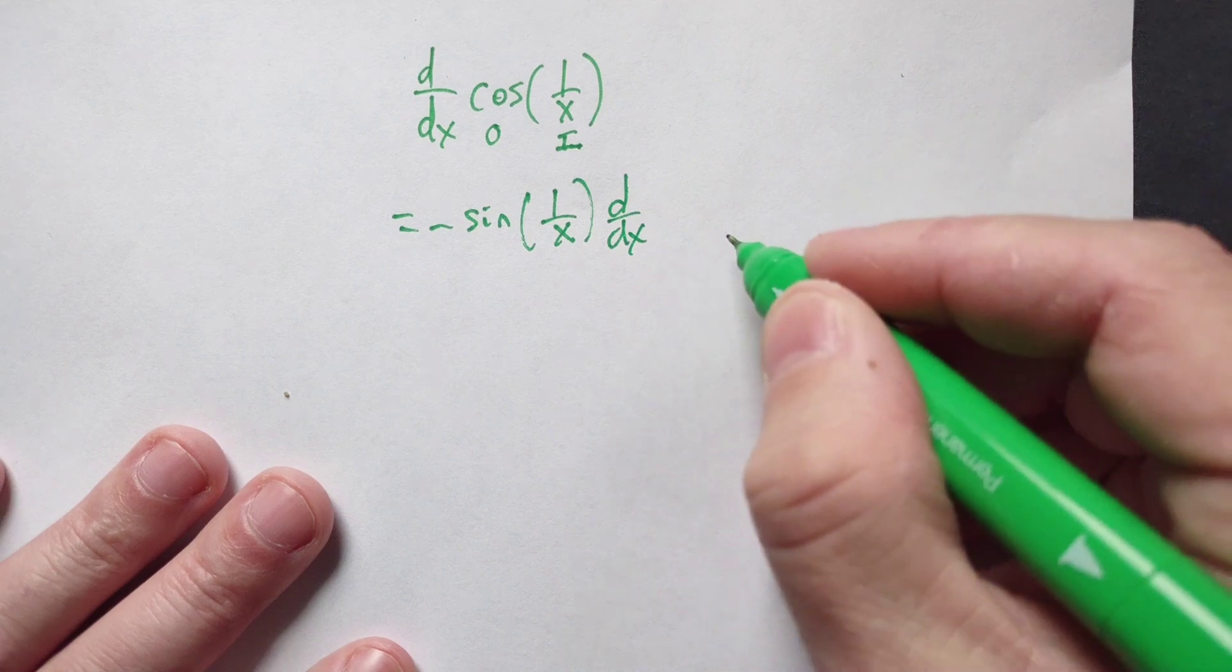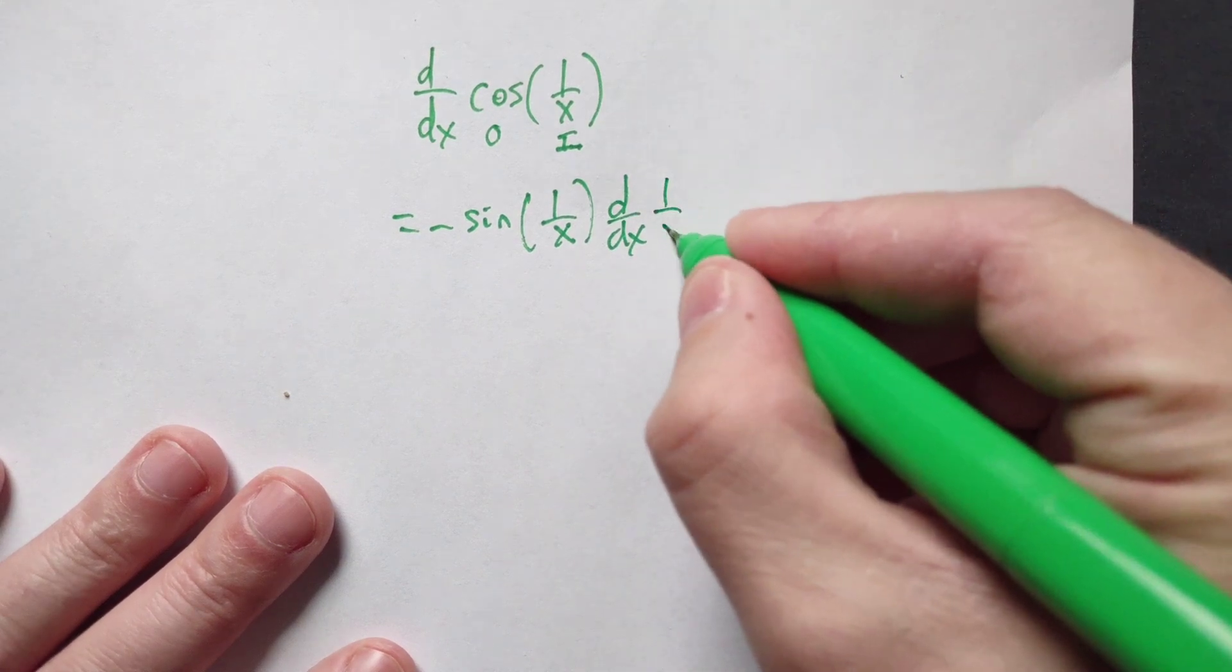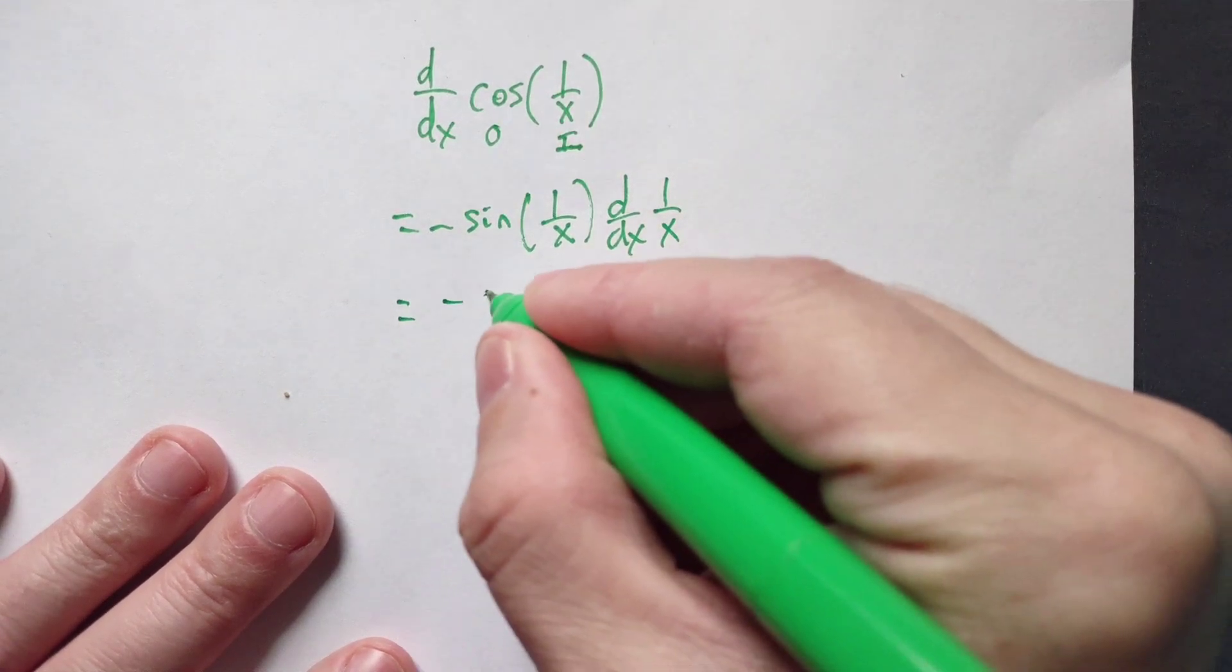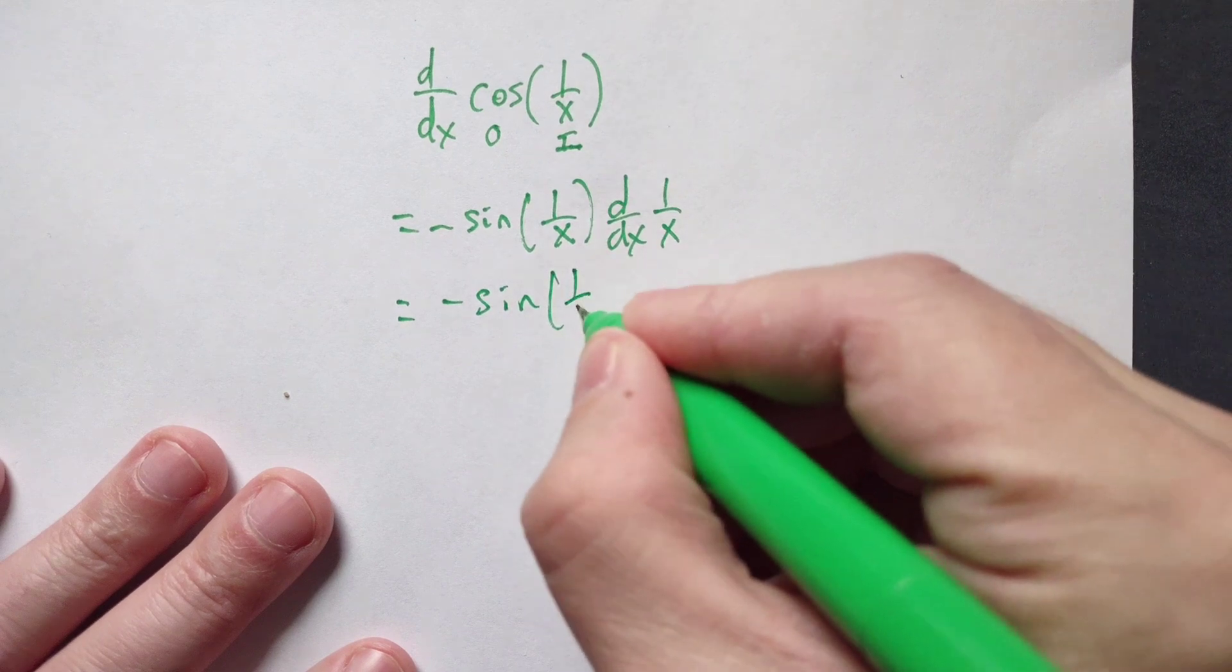But then you have to multiply by the derivative of the inside, which would be here 1 over x. Then you continue, so it's going to be negative sine of 1 over x.